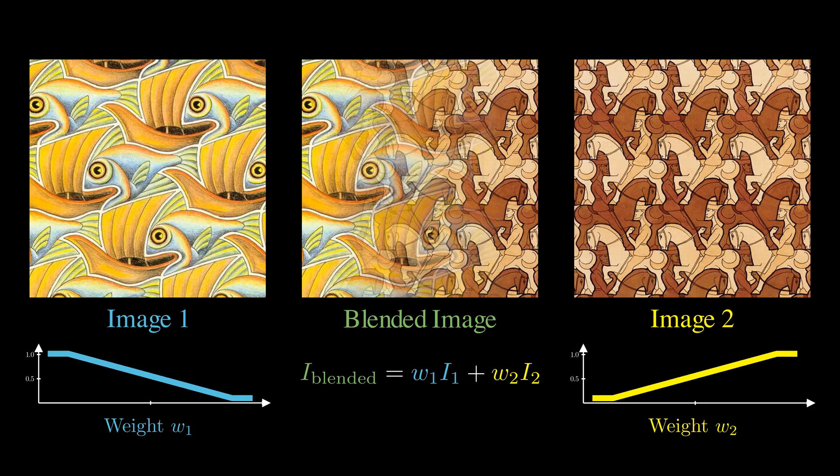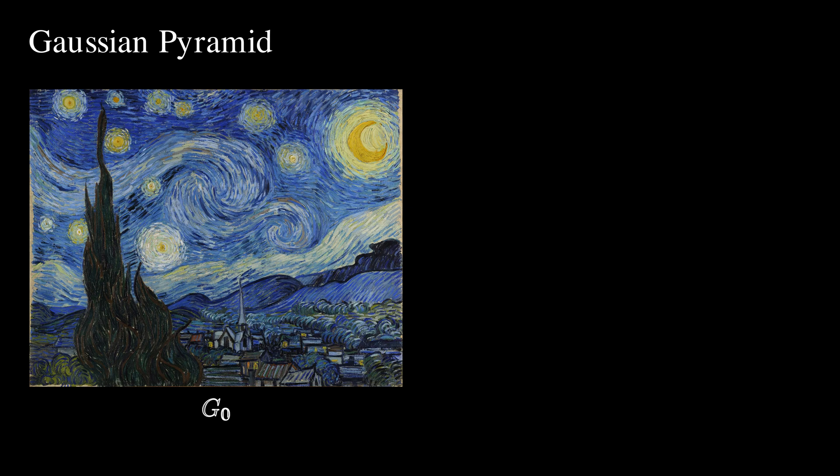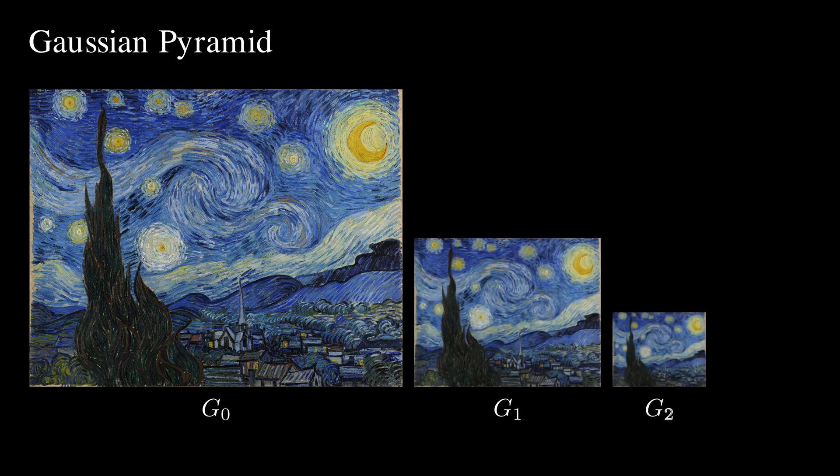But how do we do that? First, we construct a multi-scale representation of the image. We do this by repeatedly blurring and downsampling the image. The result is a Gaussian pyramid.